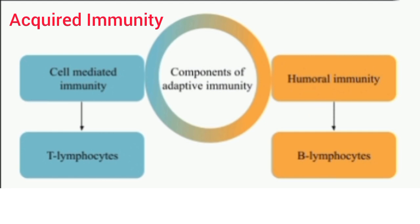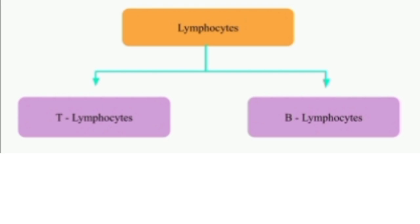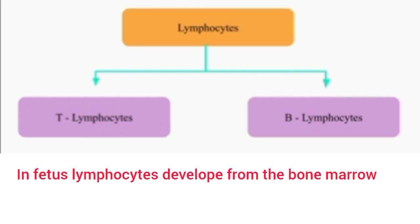Acquired immunity is of two types: cellular immunity and humoral immunity. Lymphocytes are responsible for the development of these two types of immunity. In the fetus, lymphocytes develop from the bone marrow. All lymphocytes are released into circulation and differentiated into T lymphocytes or T cells, responsible for cellular immunity, and B lymphocytes or B cells, responsible for humoral immunity.